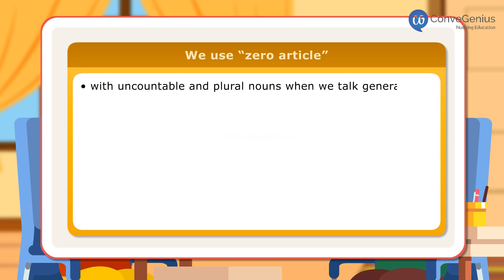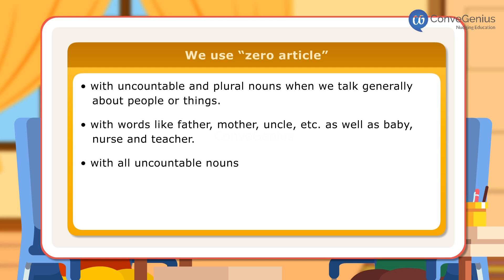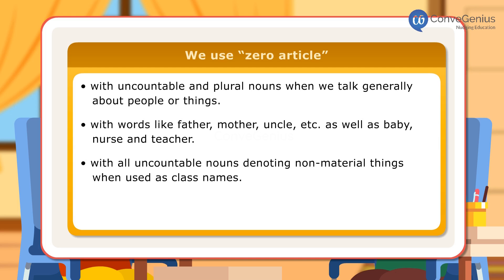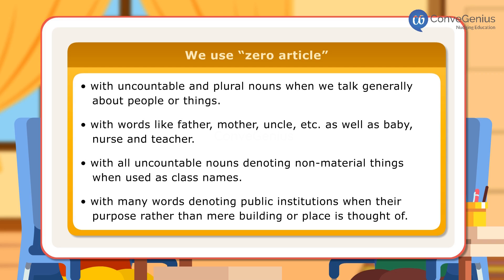We use zero article with uncountable and plural nouns when we talk generally about people or things, with words like father, mother, uncle, etc., as well as baby, nurse and teacher, with all uncountable nouns denoting non-material things when used as class names, and with many words denoting public institutions when their purpose rather than the mere building or place is thought of.